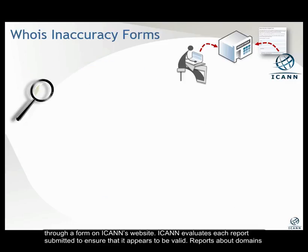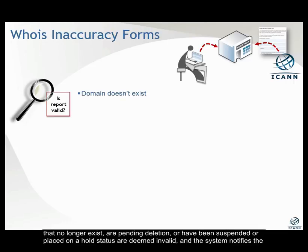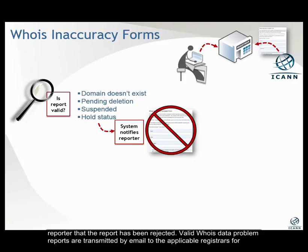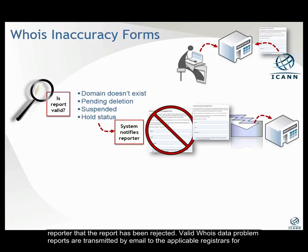ICANN evaluates each report submitted to ensure that it appears to be valid. Reports about domains that no longer exist, are pending deletion, or have been suspended or placed on a hold status are deemed invalid, and the system notifies the reporter that the report has been rejected. Valid WHOIS data problem reports are transmitted by email to the applicable registrars for investigation.